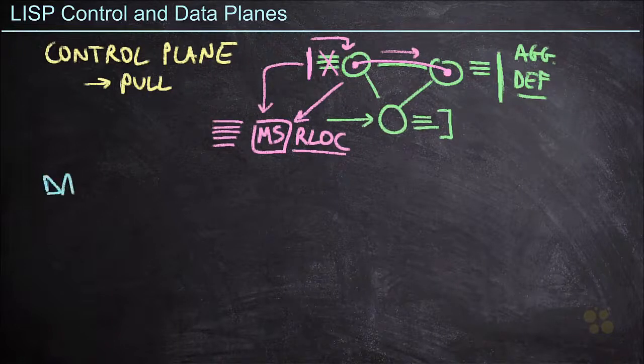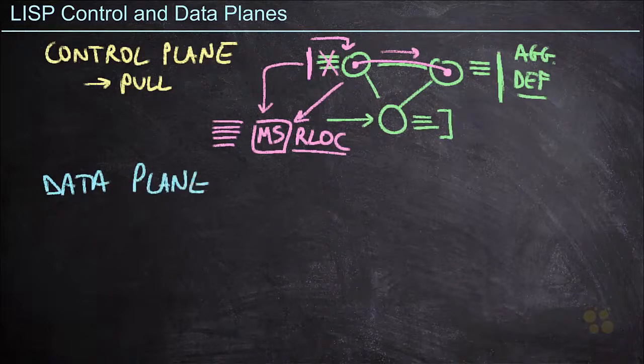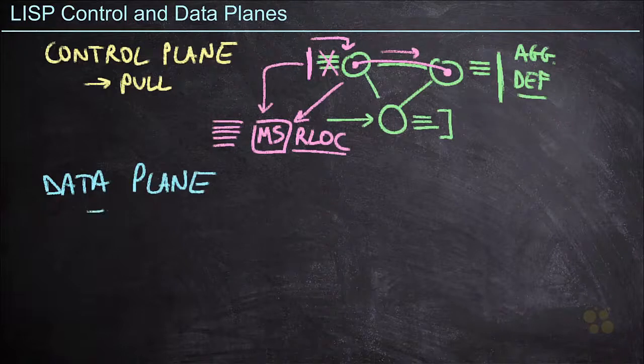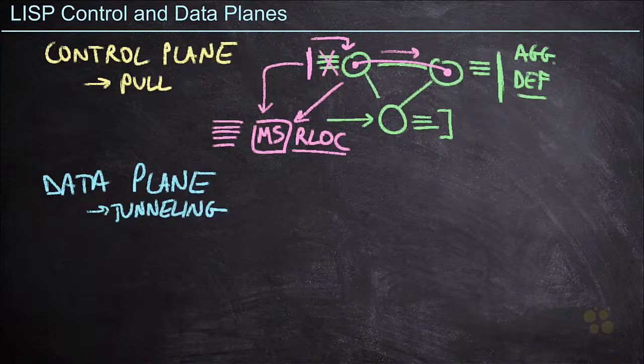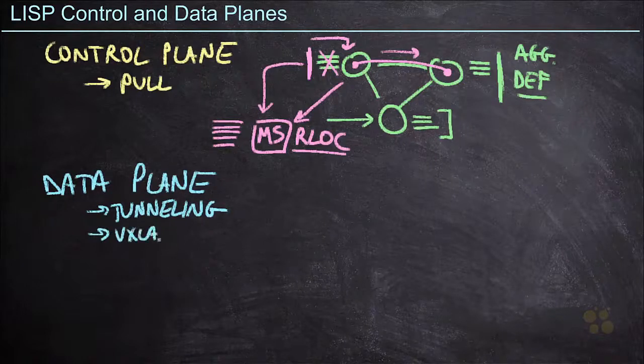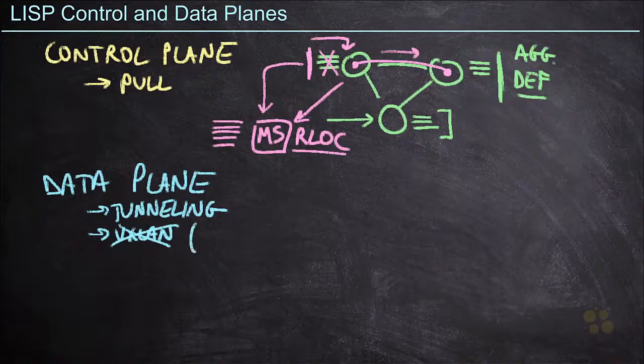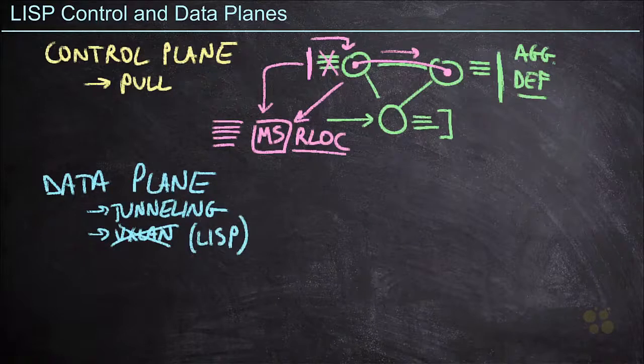Now, speaking of tunnels, we also need to discuss the LISP data plane. As mentioned a few times, the data plane is going to be a tunneling mechanism. However, this is going to differ from what we're accustomed to in an SDA fabric. Because in an SDA fabric, we use VXLAN for a tunneling mechanism, but not so in a traditional LISP environment. LISP itself has a tunneling mechanism that is used in the internet service provider space.